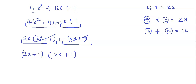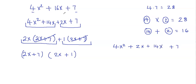Some students may ask: can we write 16x as 2x plus 14x instead? Yes, you can. If I write it as 4x squared plus 2x plus 14x plus 7, I still did not change anything — this is just a different way of writing 16x, because positive 2x plus 14x still gives me 16x. Writing it in this form will still give the same final answer.